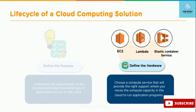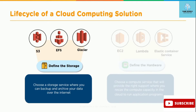The next thing would be to define the hardware — meaning choose the compute service that will provide the right support. You can resize the compute capacity in the cloud to run application programs. Getting a sound understanding of the requirements helps in picking the right hardware, since one size does not fit all. There are different services for different needs, like EC2, Lambda for serverless computing, and ECS that provides container-based service.